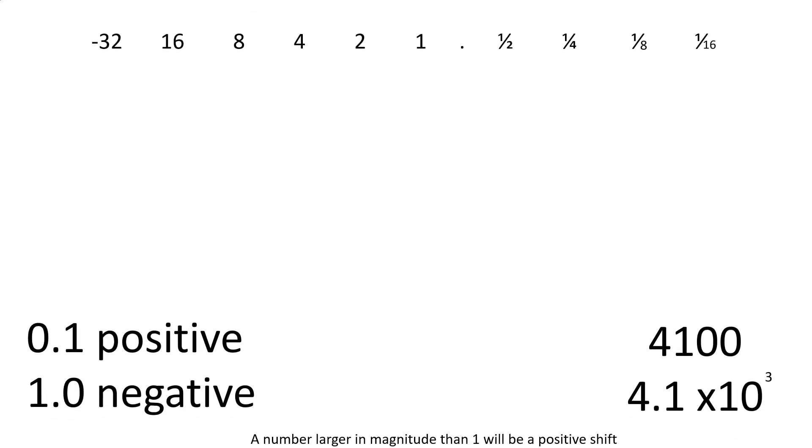We'll have another try at another number. This time we're going to try 0.375. Now this number is smaller in magnitude than 1, therefore it's going to be a negative shift. First of all, let's try and figure out what our number is in binary. 0.375 is a quarter, which is 0.25, plus an eighth, which is 0.125.